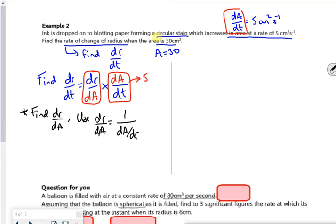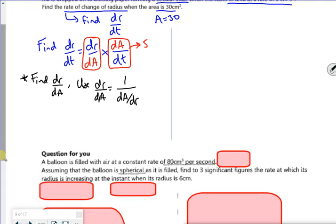Remember the dy by dx is 1 over dx by dy. So if I've got A is πr², dA by dr is 2πr, which means that dr by dA is 1 over 2πr.